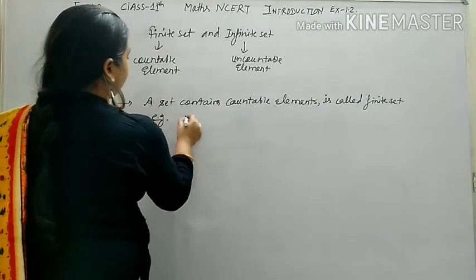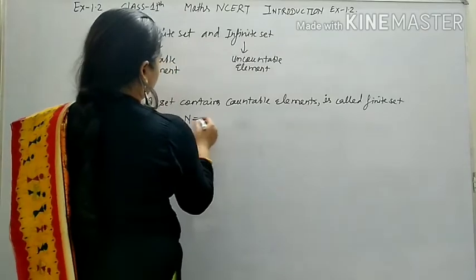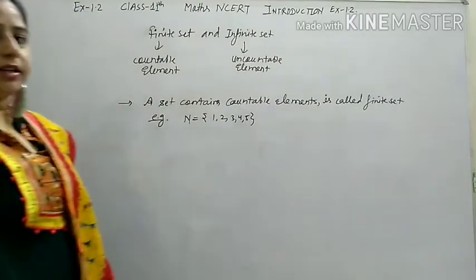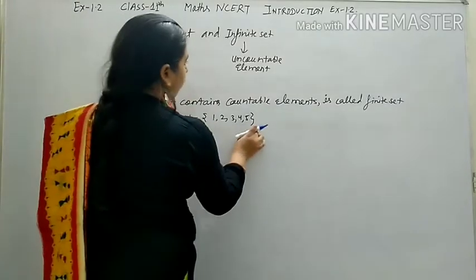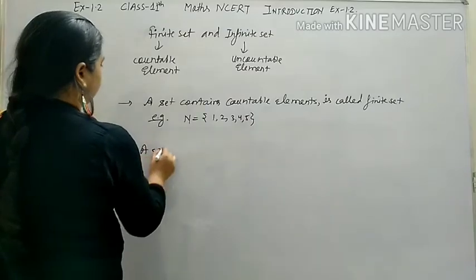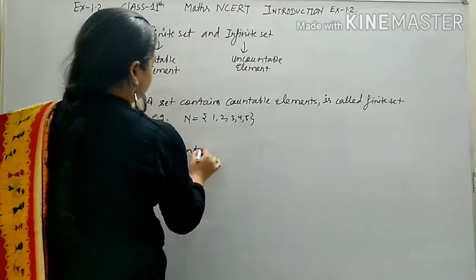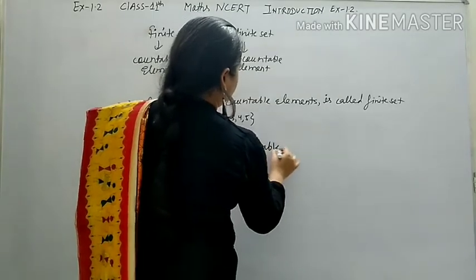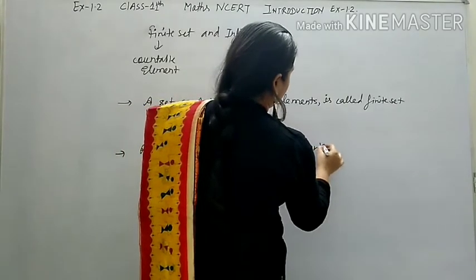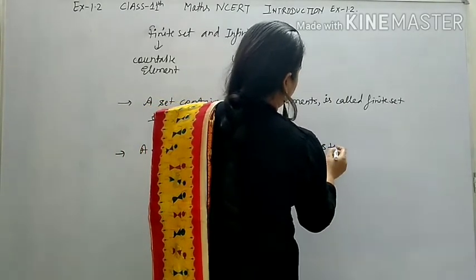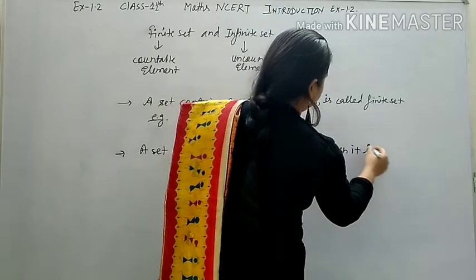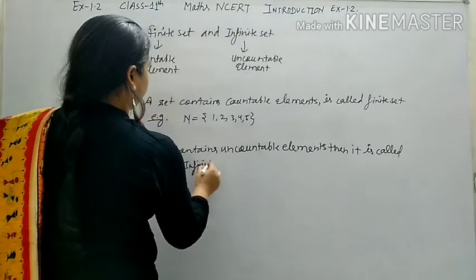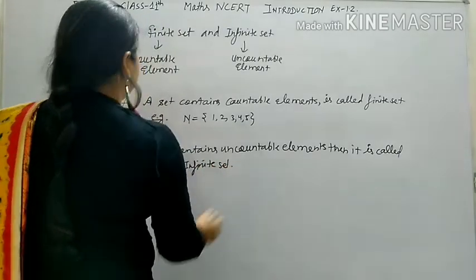For example, if I have the set of natural numbers {1, 2, 3, 4, 5}, there are five elements, which is countable — so it is a finite set. On the other hand, if a set contains uncountable elements, it is called an infinite set.